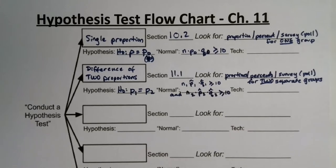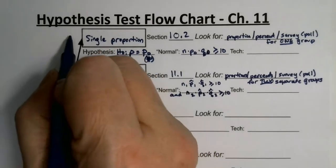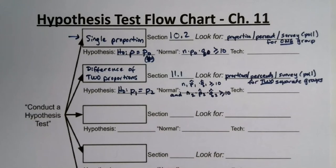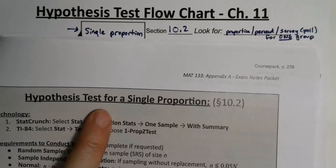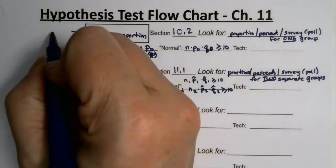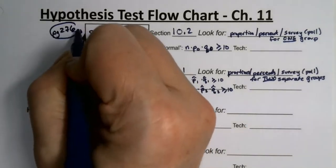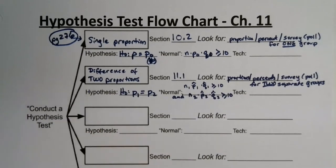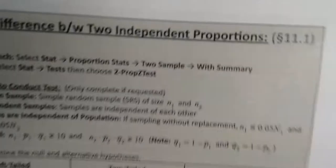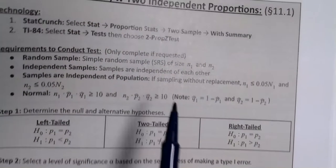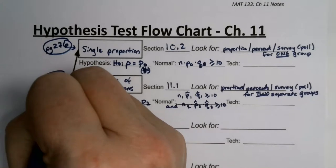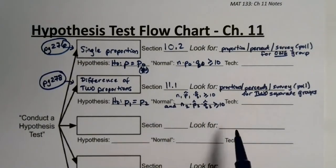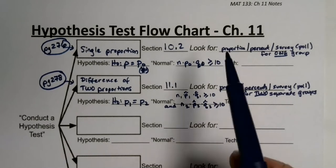The page numbers will depend on your semester. For me, the single proportion test is on page 276 and the difference in two proportions is on page 278 — you can see the normality conditions written right there. Write whatever page number applies to your version.